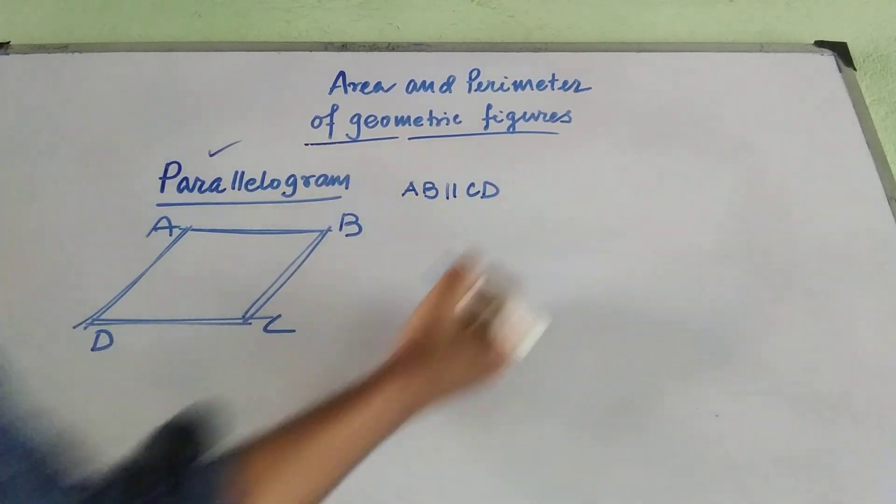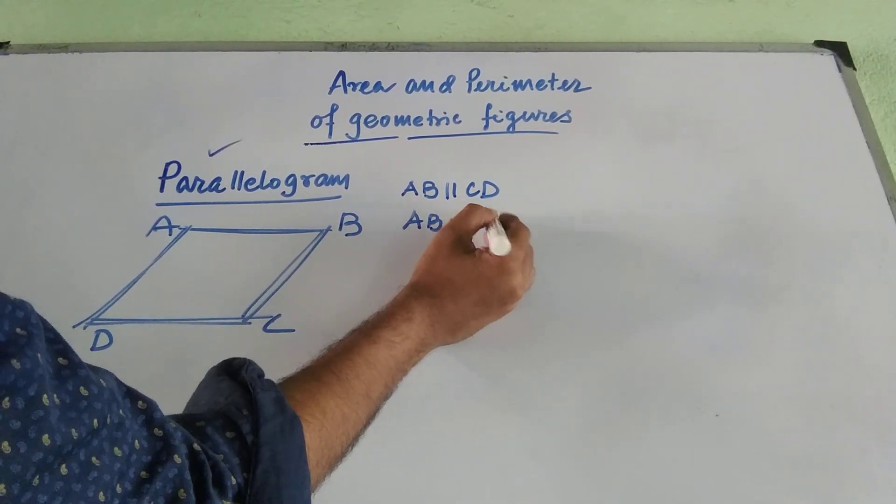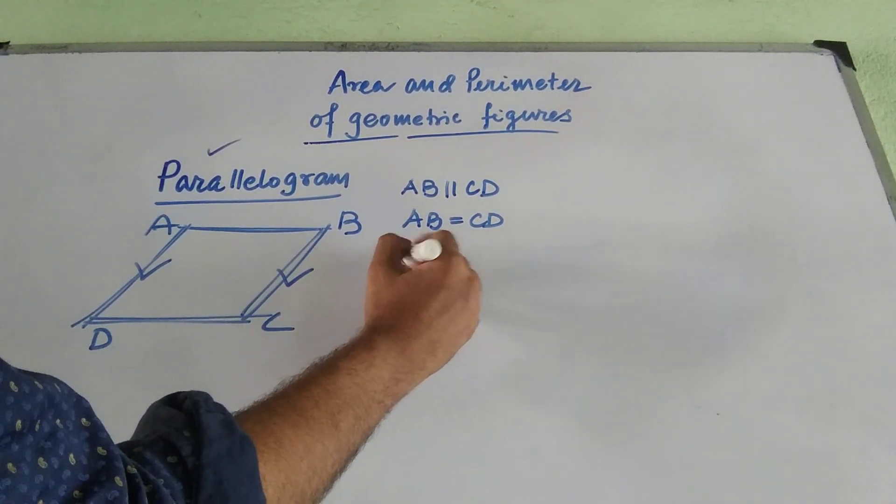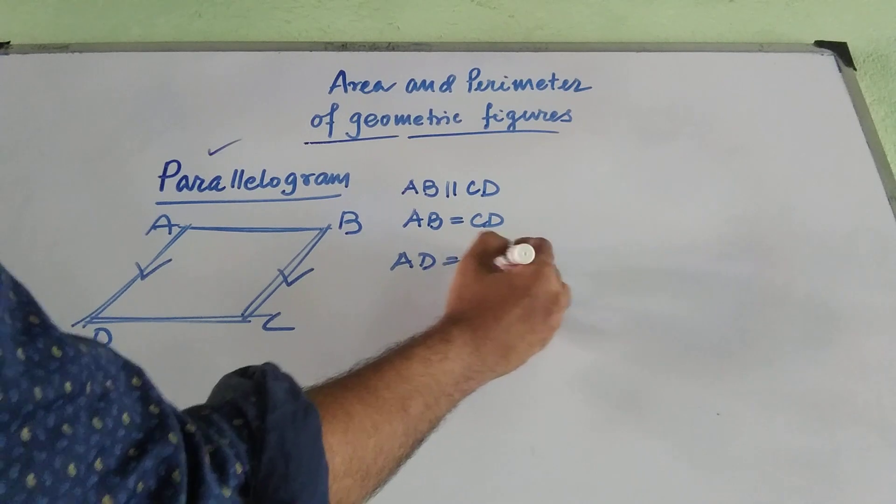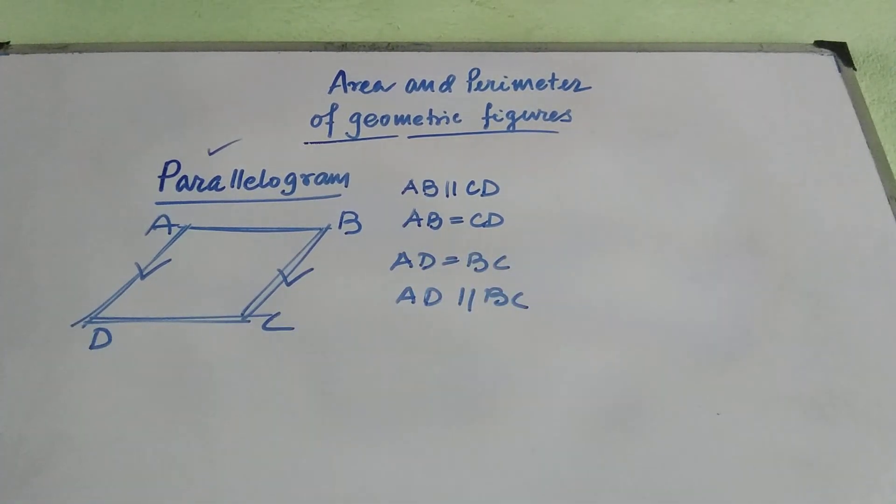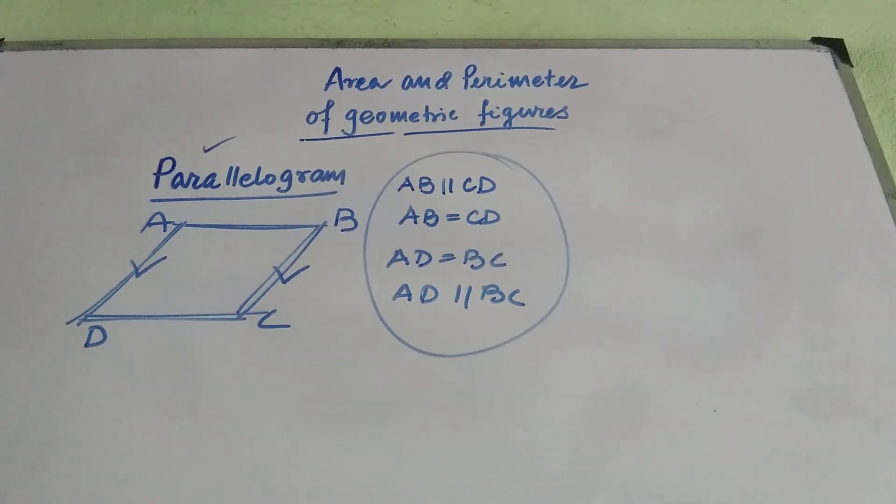That means AB is parallel to CD. At the same time, AB is equal to CD. At the same time, AD and BC are equal. AD equal to BC and AD is parallel to BC. Keeping in mind these characteristics of a parallelogram, I am going to derive the perimeter.